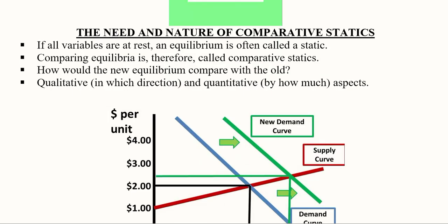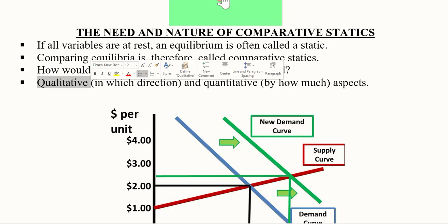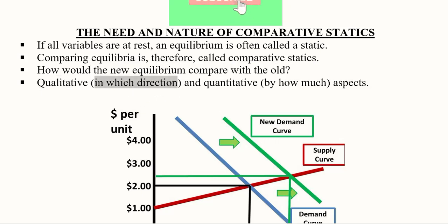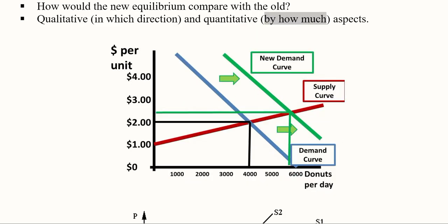One aspect of comparative statics is the qualitative aspect — in which direction the change is happening. The other is the quantitative aspect — by how much the change is occurring. As an example, we have the units per day and the price per unit in a simple supply and demand function.